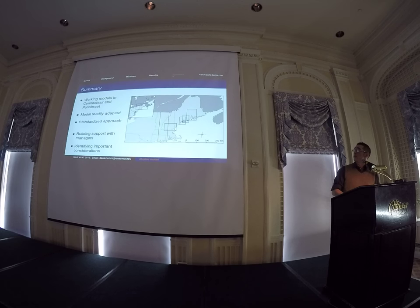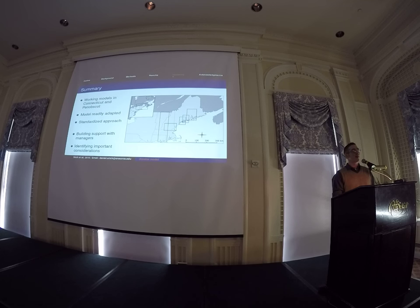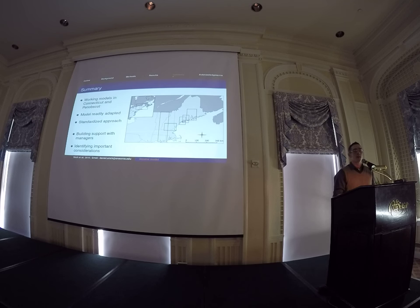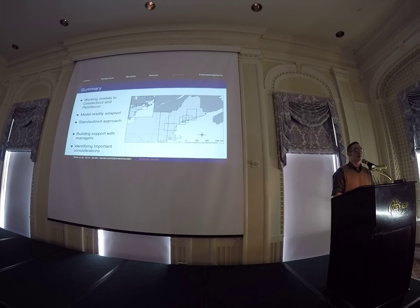We now have pretty solid working models in two of the largest rivers in the Northeast — the Connecticut and the Penobscot River. I just spent yesterday and the day before wrapping up revisions on the model with a group of about 30 to 40 people in Connecticut. A lot of experts in the field have given us really good, candid, critical reviews of the model, and we want this thing to be based on the best available information. The model is pretty readily adapted, and while river systems are a little tougher, we're working on preliminary models for alewife in the Penobscot River.